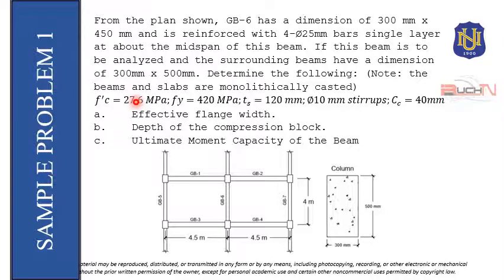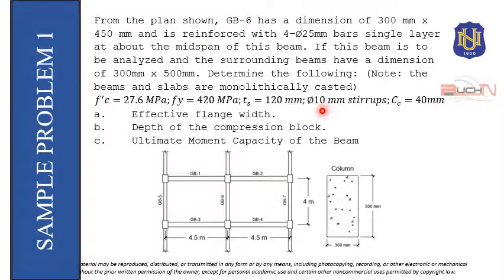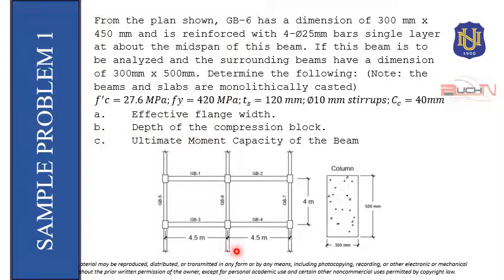Note that the beams and slabs are monolithically cast. F'c is equal to 27.6 MPa, Fy is equal to 420 MPa, and the thickness of the slab T_s is 120mm. We use diameter 10mm stirrups for all beams and the concrete clear cover of GB-6 is 40mm. We are to determine the effective flange width, the depth of the compression block, and the ultimate moment capacity of the beam.